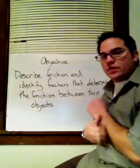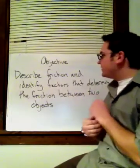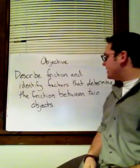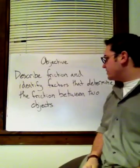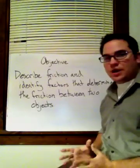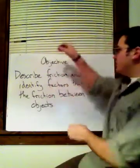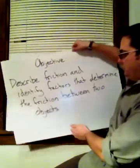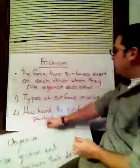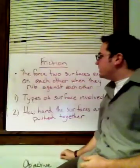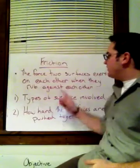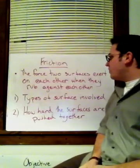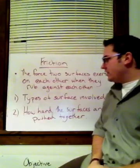In this video, our objective is to describe friction and identify factors that determine the friction between two objects. Let's go over the definition of what friction is. Friction is the force two surfaces exert on each other when they rub against each other.